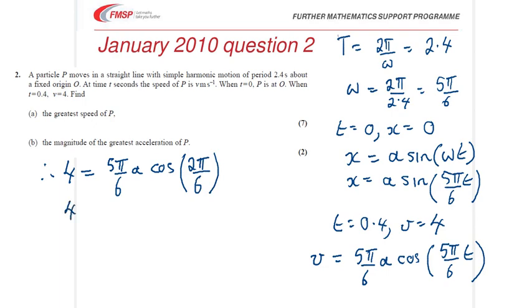So, that gives us 4 equals 5π over 6a, times a half. Just check these steps. And then, rearranging that, we get the amplitude is 48 over 5π.